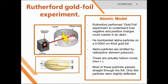Rutherford Gold Foil Experiment. According to this model, Rutherford performed the gold foil experiment to understand how negative and positive charges could coexist in an atom. He bombarded alpha particles on a 0.0004 cm thick gold foil. Alpha particles are emitted by the radioactive element polonium, which he used in this experiment.